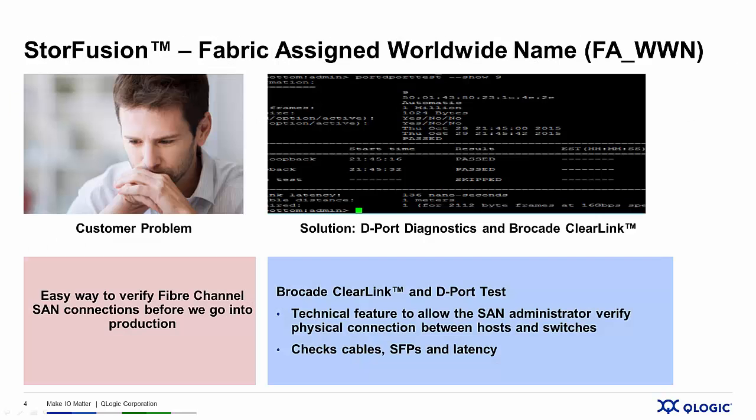Let's start by looking at the customer problem. Carl works on Sarah's SAN administration team. The team has been charged with deploying a new SAN and has used the Brocade Gen5 16GB Fibre Channel switches and Q-Logic enhanced Gen5 Fibre Channel adapters in their SAN design. The team has utilized Fabric Assign Worldwide Name and Fabric Bootland to pre-configure the entire SAN environment as they wait for the servers to arrive. Carl is in charge of the initial bring-up once the servers get there, and he wants to make sure things go as smoothly as possible and is looking for a way to validate all the SAN connections before turning on the applications. What if Carl could run a simple test to verify all those SAN connections?